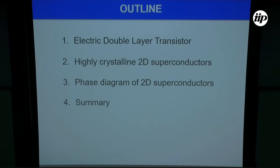Here is the outline of my talk. I will introduce our technique called the electric double-layer transistor, followed by the current status of highly crystalline 2D superconductors, which is very different from the relatively two-dimensional superconductors investigated last century. After discussing these 2D superconductors, I'd like to explain something about the phase diagram of 2D superconductors realized by gating using this transistor, followed by a summary.